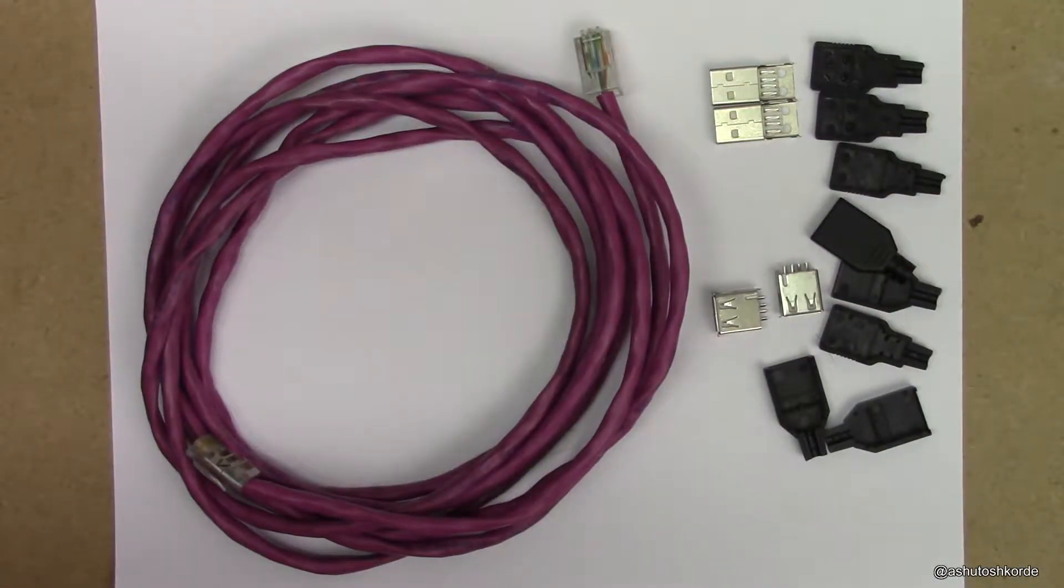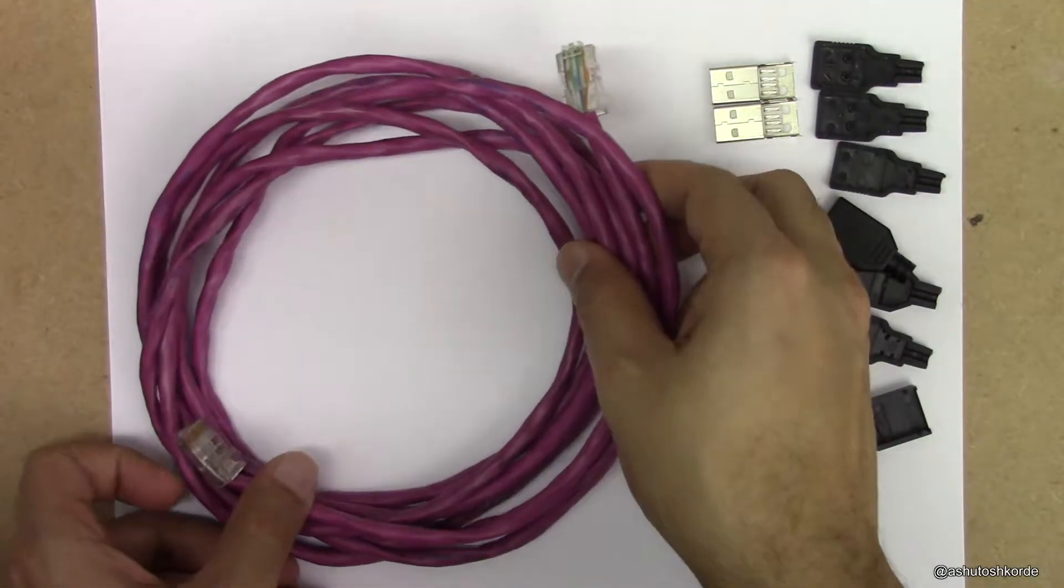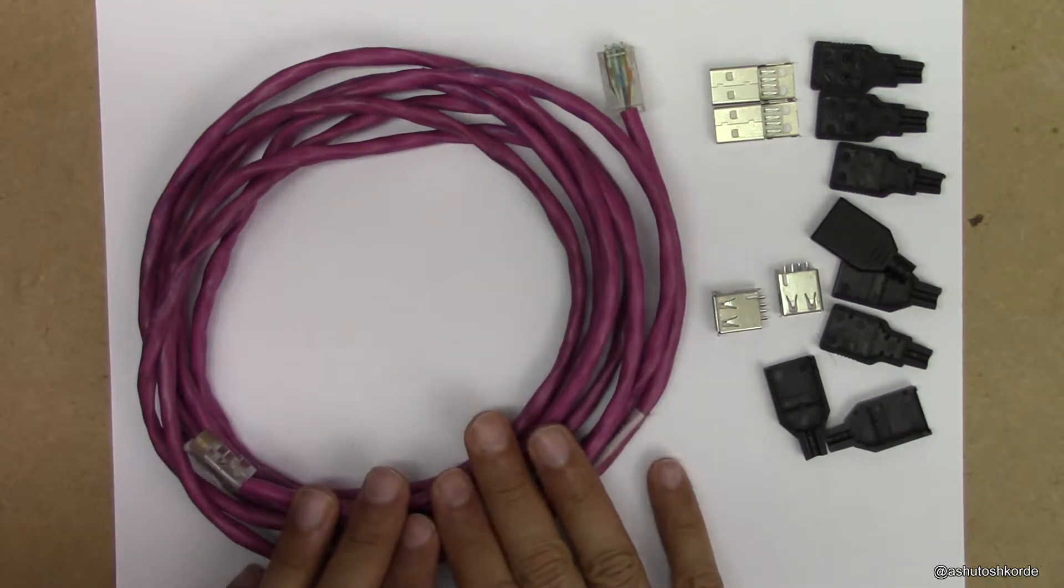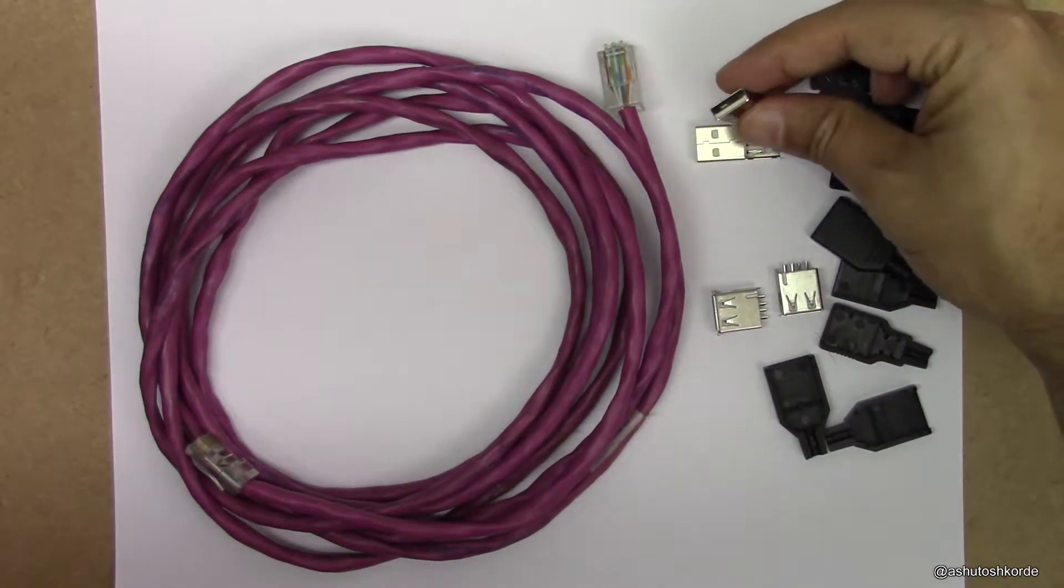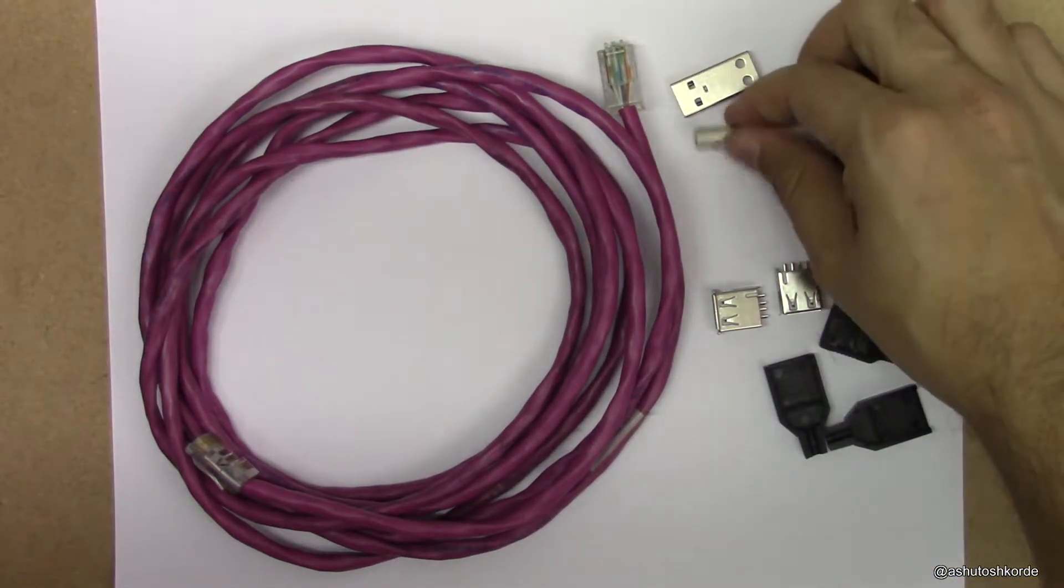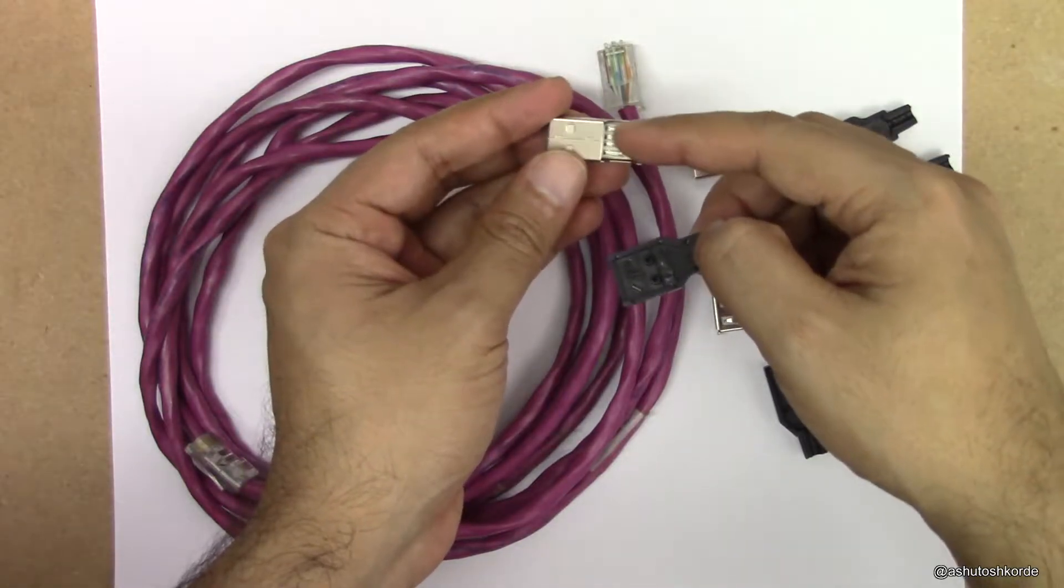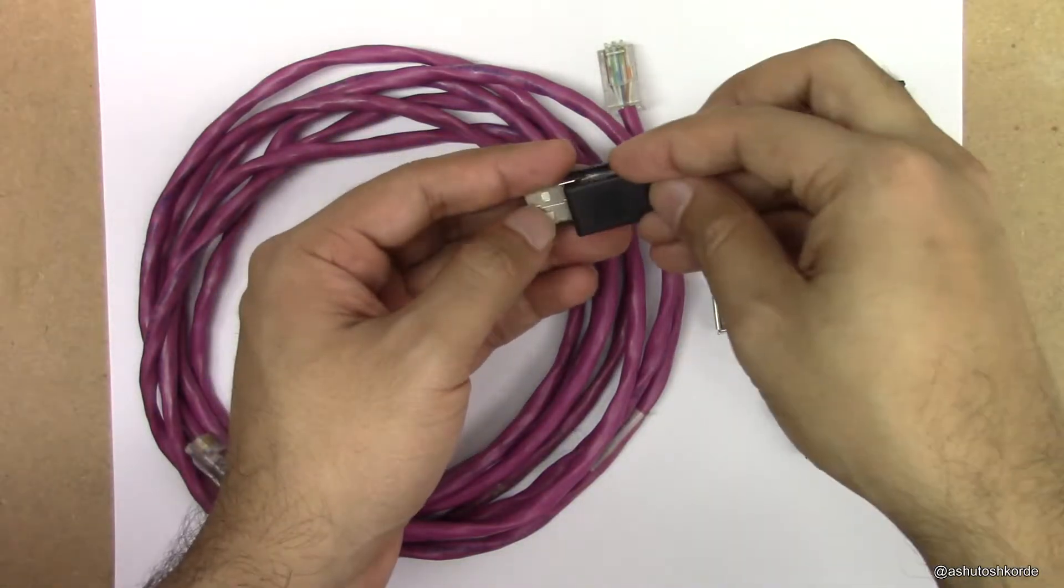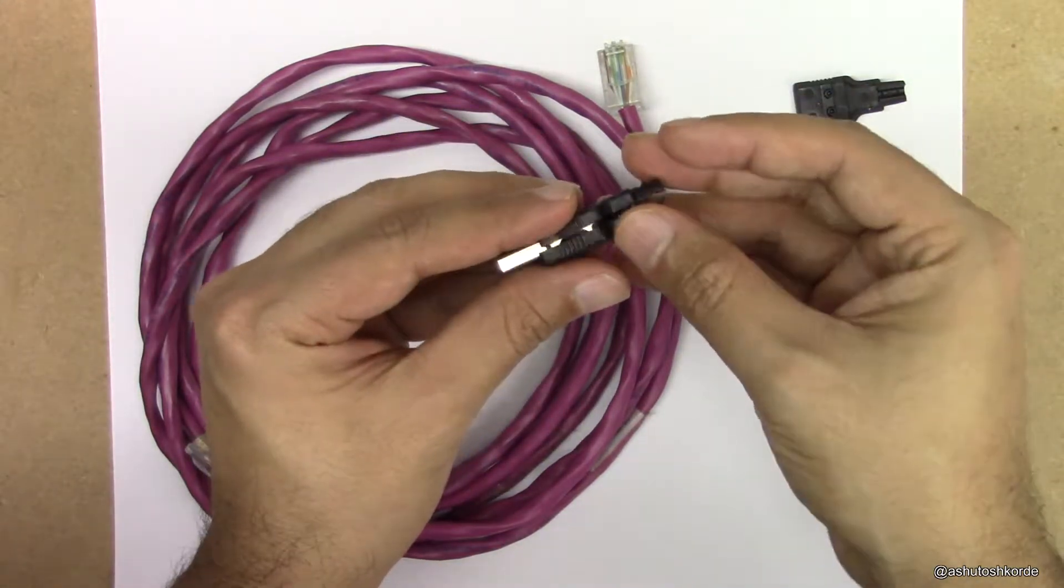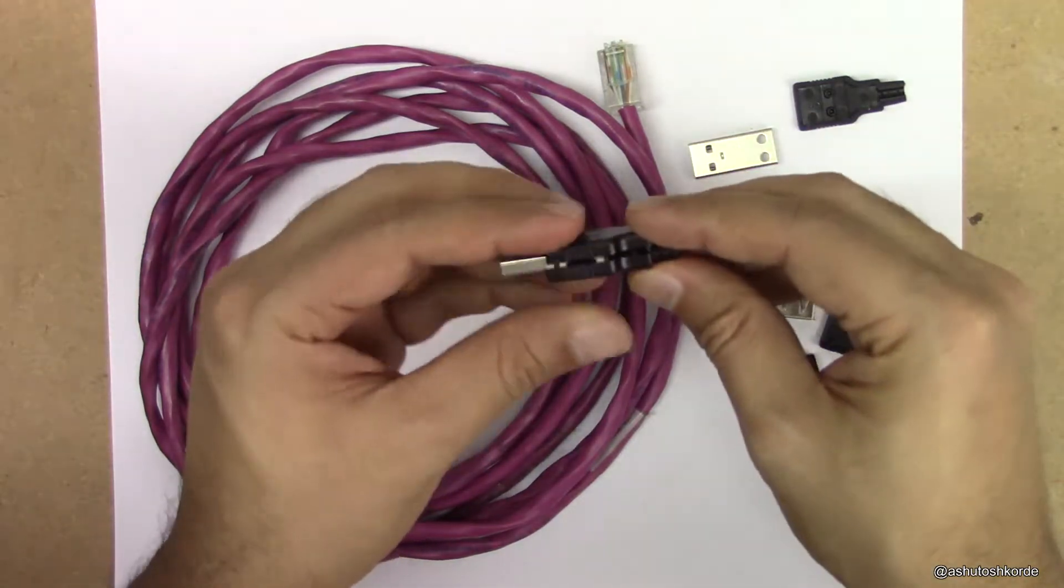So let's see how we do this. These are all the things that we need to convert a CAT5 network cable into a USB extension. We need a CAT5 cable of course, then we need two sets of male USB plugs. These are the easy snap-on ones, so you solder the wire onto these terminals and then just put this in the holder and snap them on.